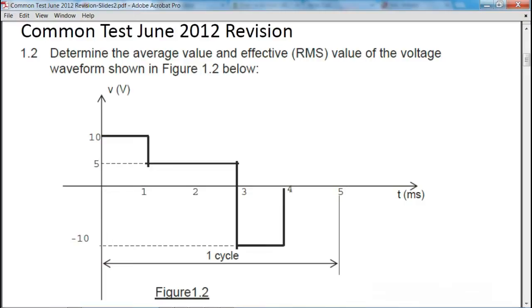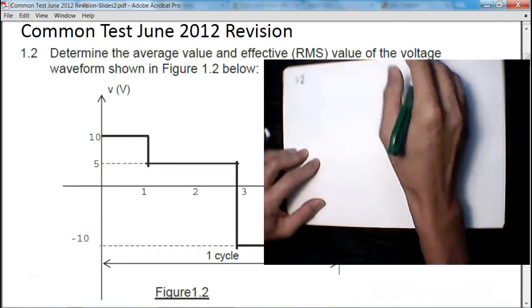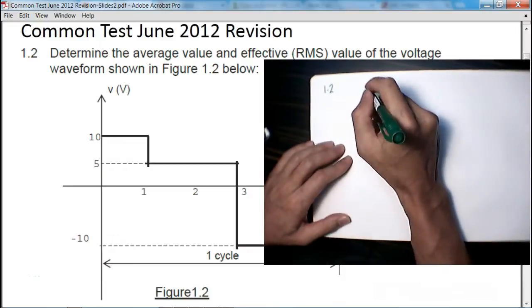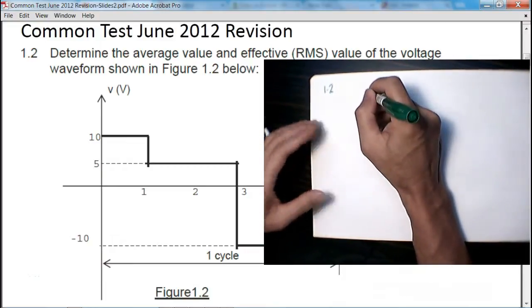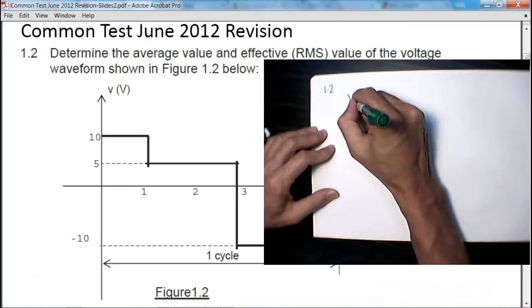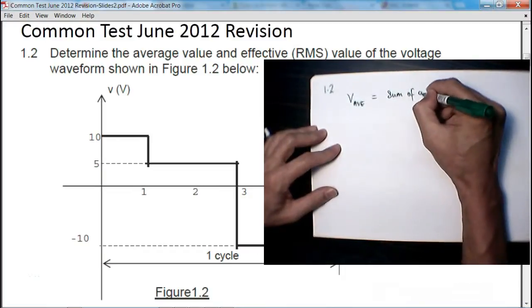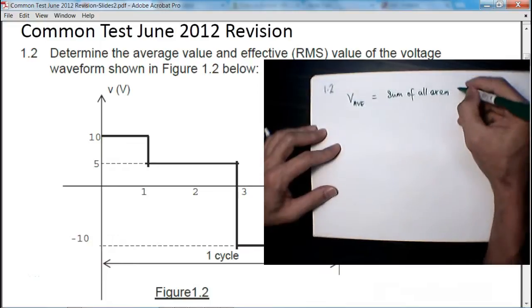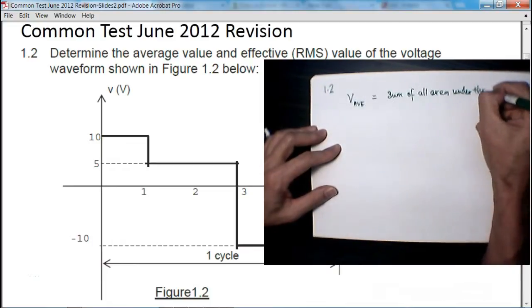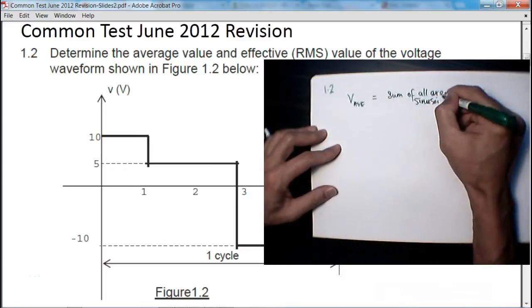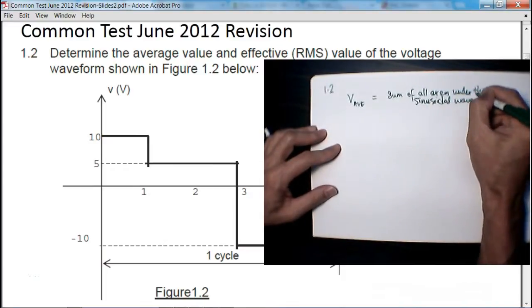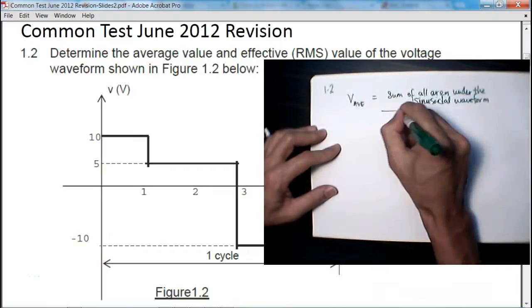In order to do this calculation, we need to understand the meaning of average value and effective RMS. Now in the sinusoidal waveform, average value in this case is voltage V average, which is the sum of all area under the sinusoidal waveform divided by the period T.